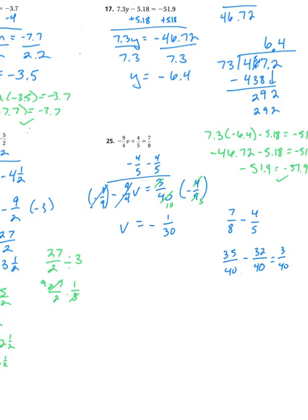So, we'll go ahead and put negative 1 over 30 back into the original equation, negative 9 over 4 times negative 1 over 30, plus 4 fifths equals 7 eighths. And let's see, it looks like we have a common factor of 3. So, this is negative times negative is positive 3 over 40, plus 4 fifths. I'll go ahead and write that as a fraction over 40.